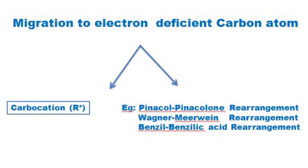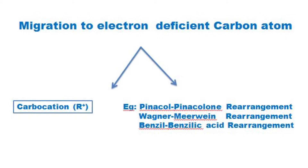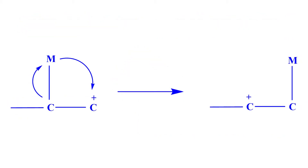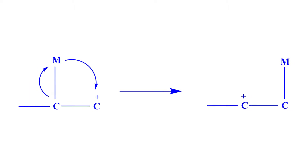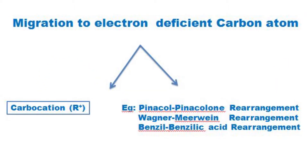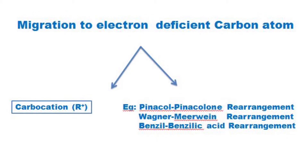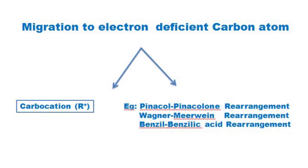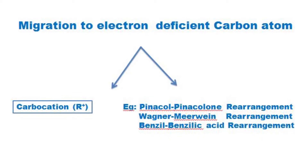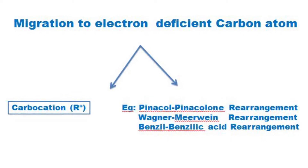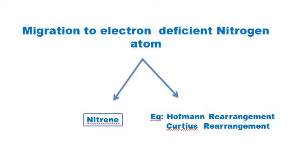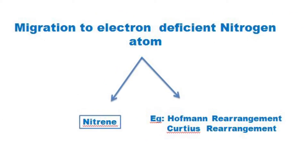In migration to electron-deficient carbon atom, the migrating group migrates to an electron-deficient carbon atom, and the intermediate in this rearrangement is a carbocation. Some examples for this rearrangement are pinacol-pinacolone rearrangement, Wagner-Meerwein rearrangement, and benzyl-benzylic acid rearrangement.